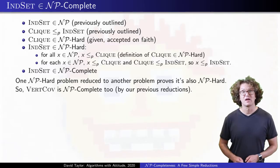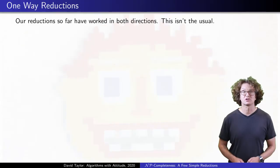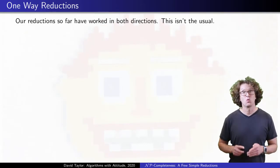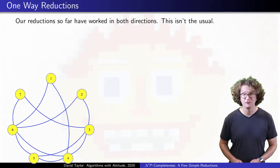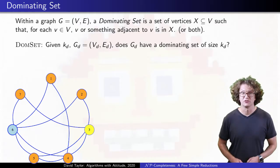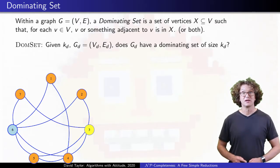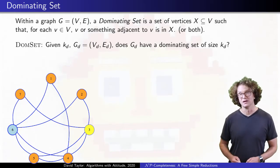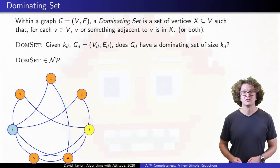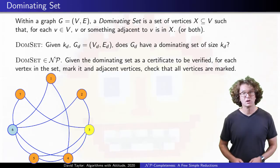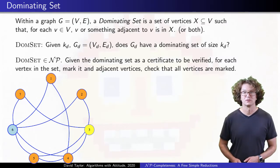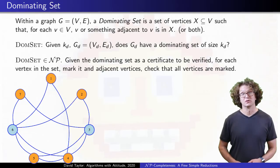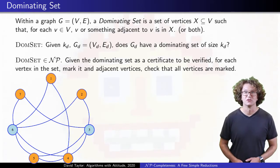That covers the basics of the definitions, but it is a bit misleading to only show reductions that work in both directions — those are pretty rare, so I want to show one more. In a graph, a vertex dominates itself and all adjacent vertices. In this graph, 6 dominates everything except 3. A dominating set is a set of vertices that dominate all vertices in a graph, and we can ask if a graph has a dominating set of a given size. That question is in NP. If somebody suggests a dominating set to you, mark each vertex and everything adjacent to it, and then check that all vertices of the graph are marked. If I add vertex 3 to vertex 6, I can verify that those two vertices are a dominating set.